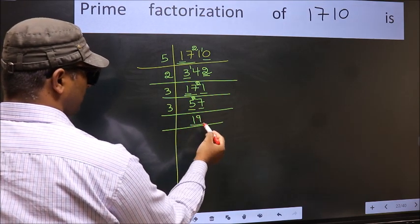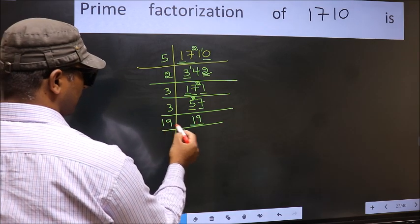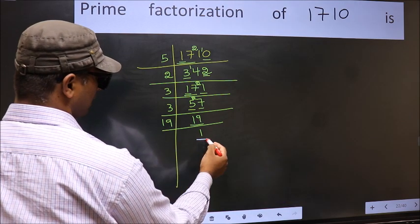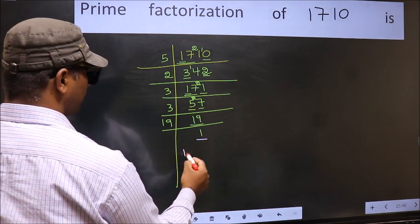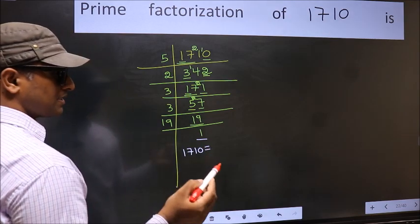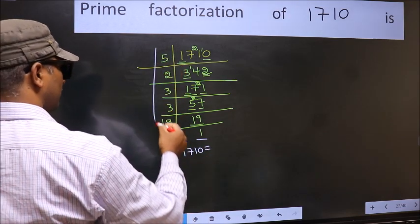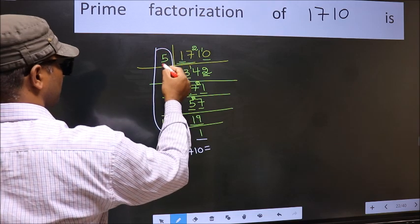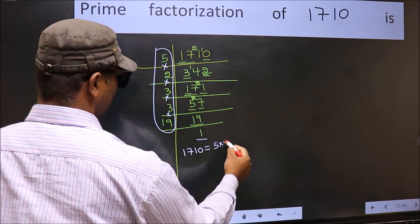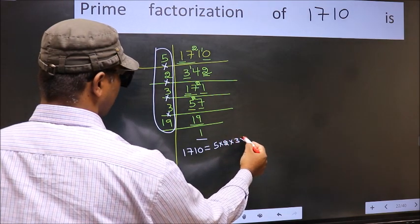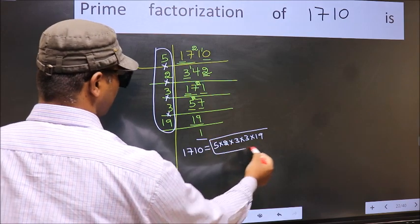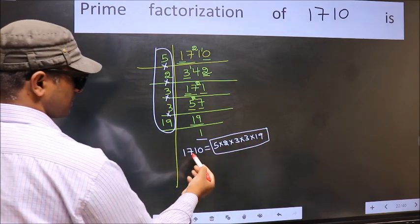Now here we have 19. 19 is a prime number, so 19×1=19. We got 1 here. So the prime factorization of 1710 is the product of these numbers: 5 × 2 × 3 × 3 × 19. This is the prime factorization of 1710.